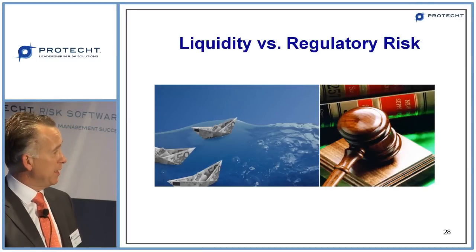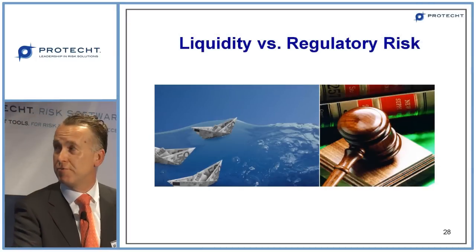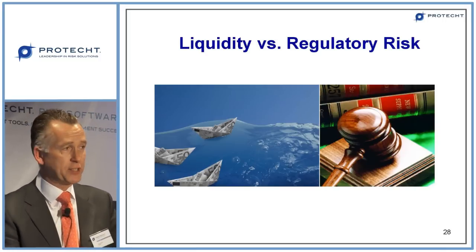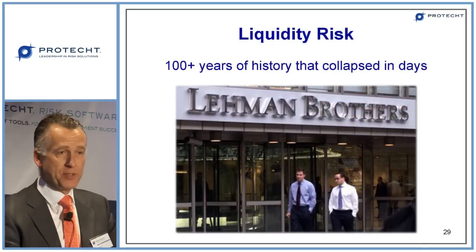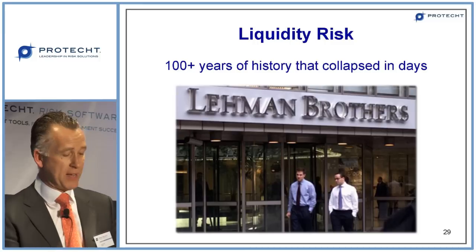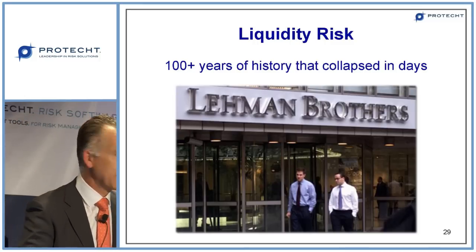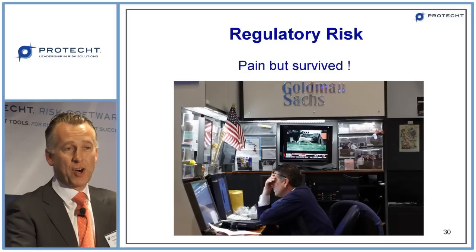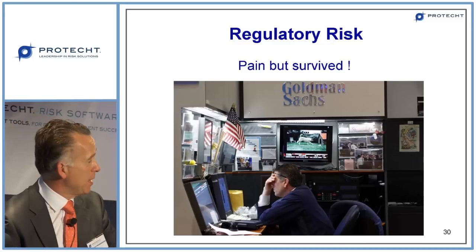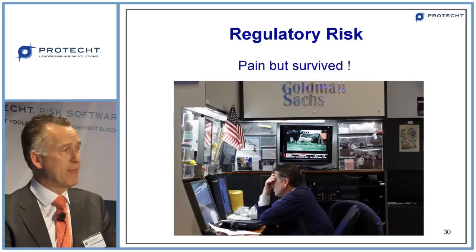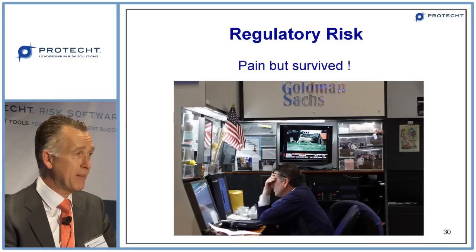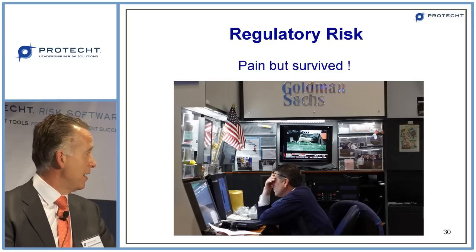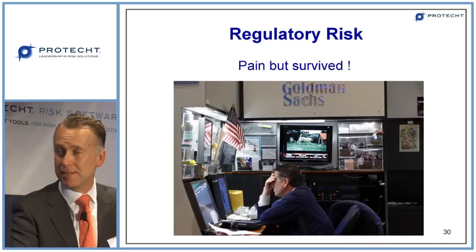If we take the banking community over the GFC: two examples — fast velocity risk: liquidity risk; slower velocity risk: regulatory risk. Lehman's was liquidity risk, and in a very short space of time a hundred-plus years of banking history was gone. Regulatory risk — maybe Goldman Sachs — paying but surviving. Those regulatory impacts were very big, but they had time to deal with them: time to have a meeting with the regulator, go for lunch, come back, have another meeting. With liquidity risk it was all over before we could blink — and that really is the difference in the ultimate impact of those two velocities.